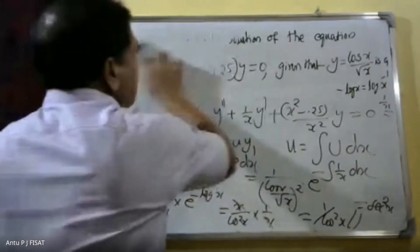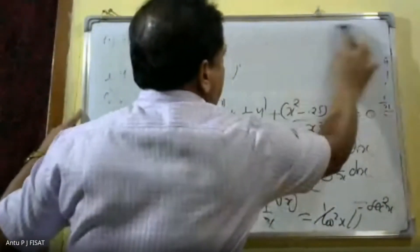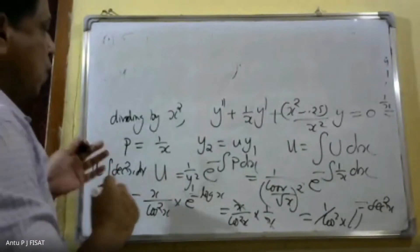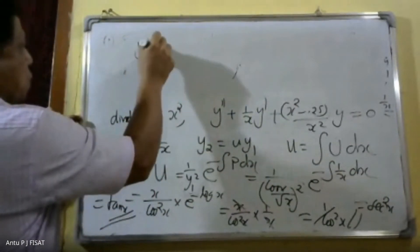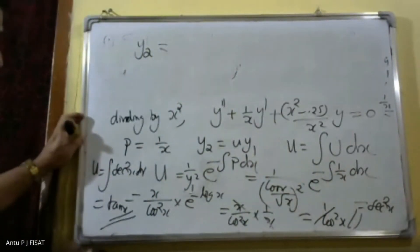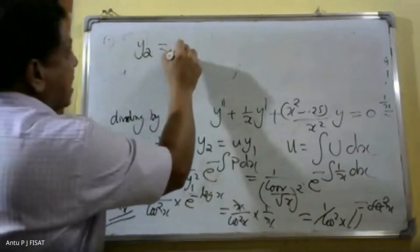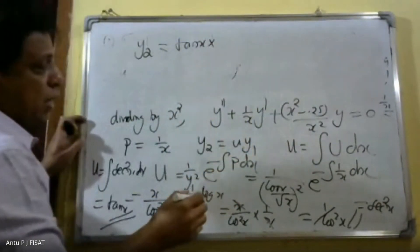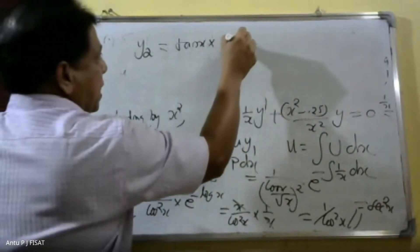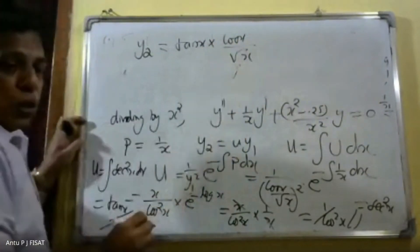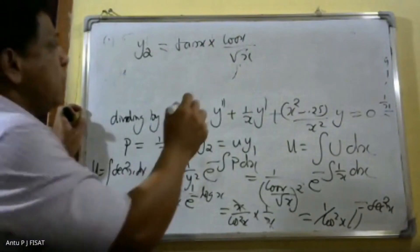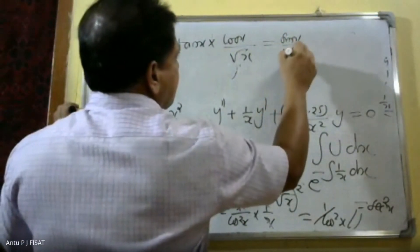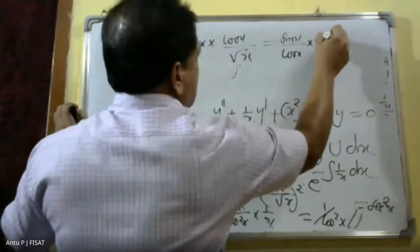Therefore y₂ = u·y₁ = tan(x) · cos(x)/√x = sin(x)/√x.